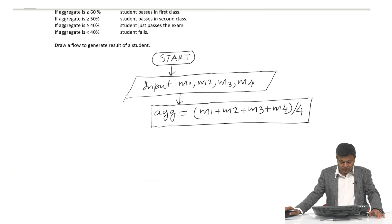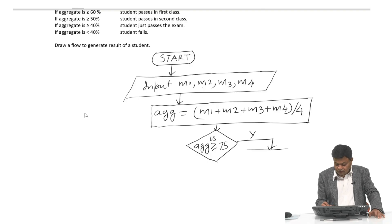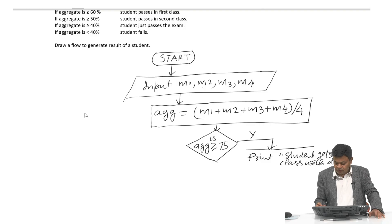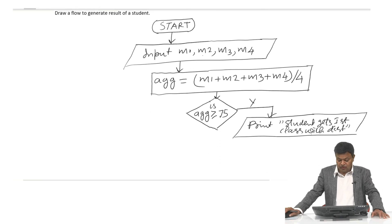Now I will start taking my conditions. First I will check for the highest condition: is AGG greater than or equal to 75? Yes — print student gets first class with distinction. So if aggregate is equal to or above 75%, I print that the student gets first class with distinction.